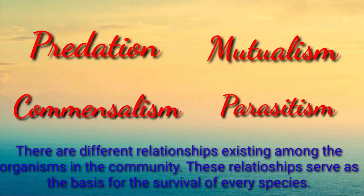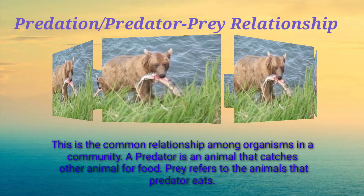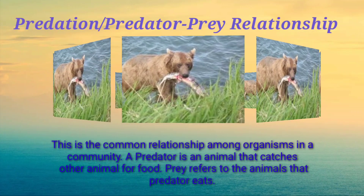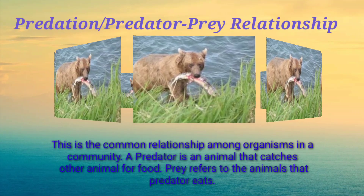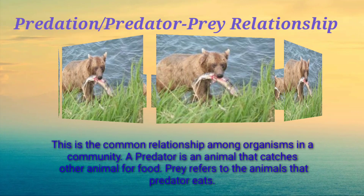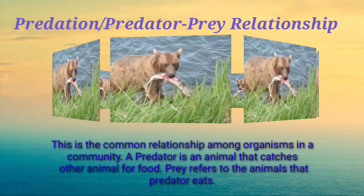There are different relationships existing among the organisms in the community. These relationships serve as the basis for the survival of every species. The first is predation, or the predator-prey relationship. This is the most common relationship among organisms in a community. A predator is an animal that catches other animals for food, while prey refers to the animals that the predator eats.